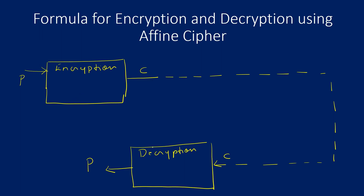The ciphertext cannot be decoded by anyone on the public communication channel other than the receiver, who uses the decryption algorithm to recover the plaintext. To encrypt and decrypt, the Affine cipher makes use of two keys, k1 and k2, which the sender securely shares with the receiver.